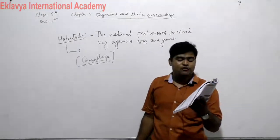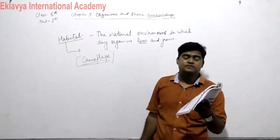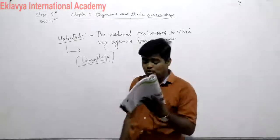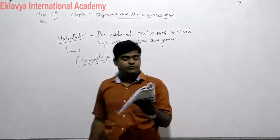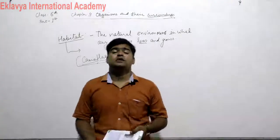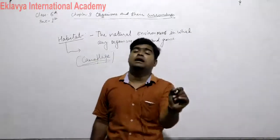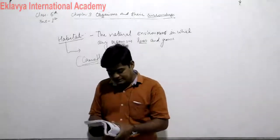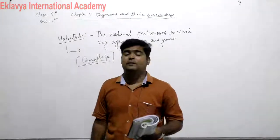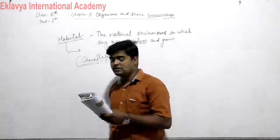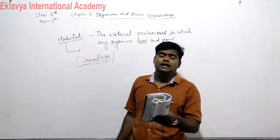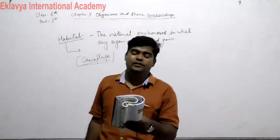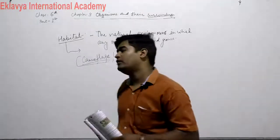Grasslands are partly dry areas and can be found all over the world except Antarctica. They cover about one-fourth of the earth's total land surface. As grasslands do not get a lot of rain, many of the plants growing here have small leaves to reduce loss of water.